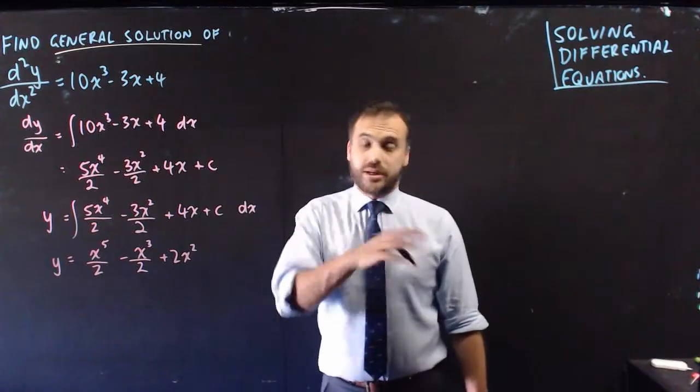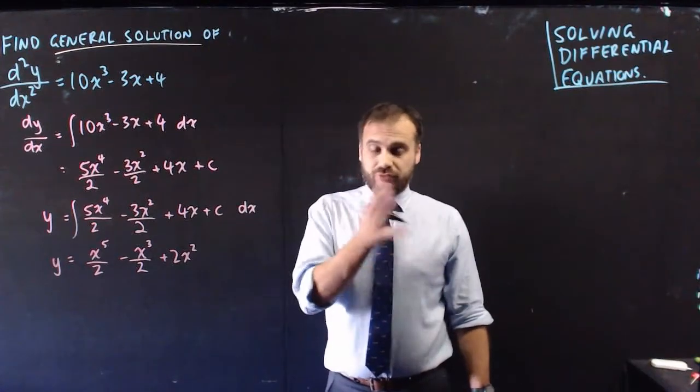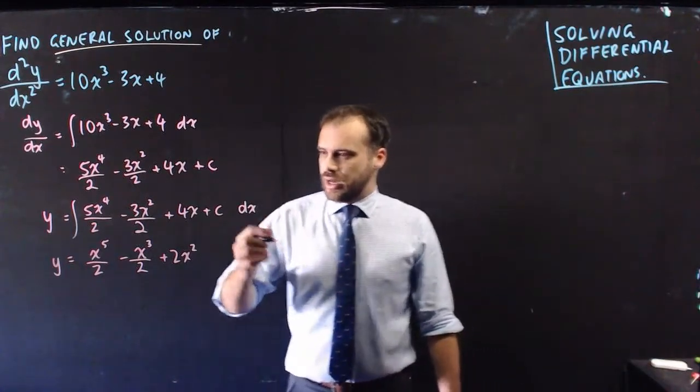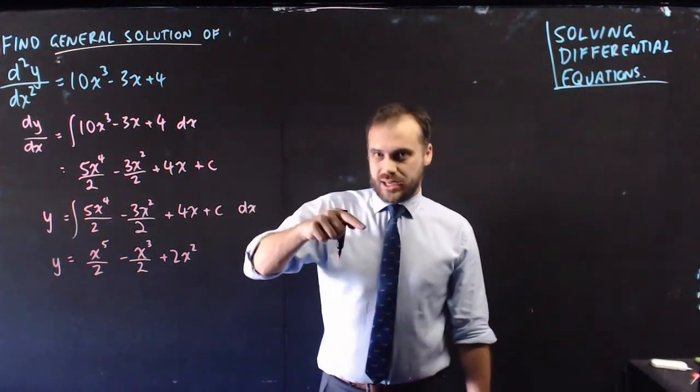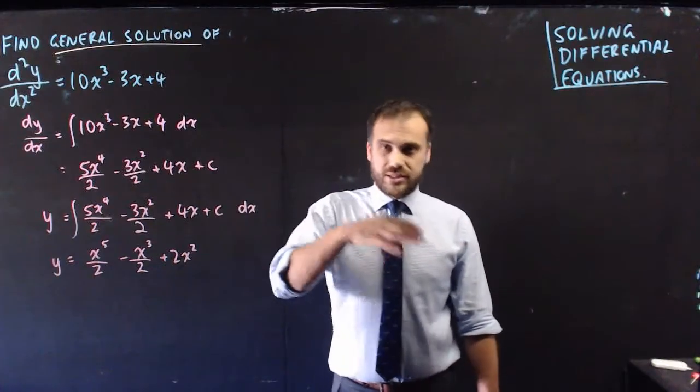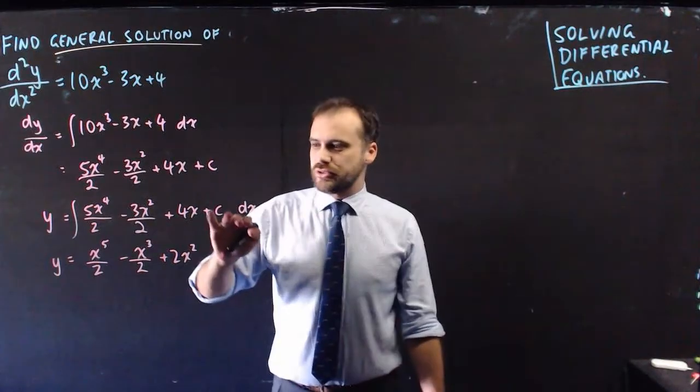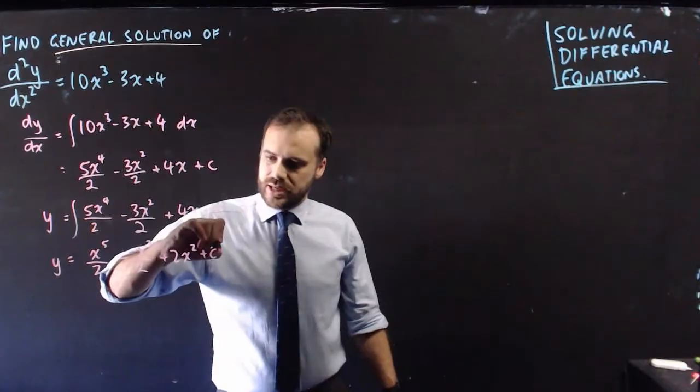Now c is just a number. I don't know what the number is, but it's definitely a number, like 5 or 7 or negative 10. The integral of any number is just that number times x. So the integral of 5 is 5x, the integral of 9 is 9x, so the integral of c is cx.